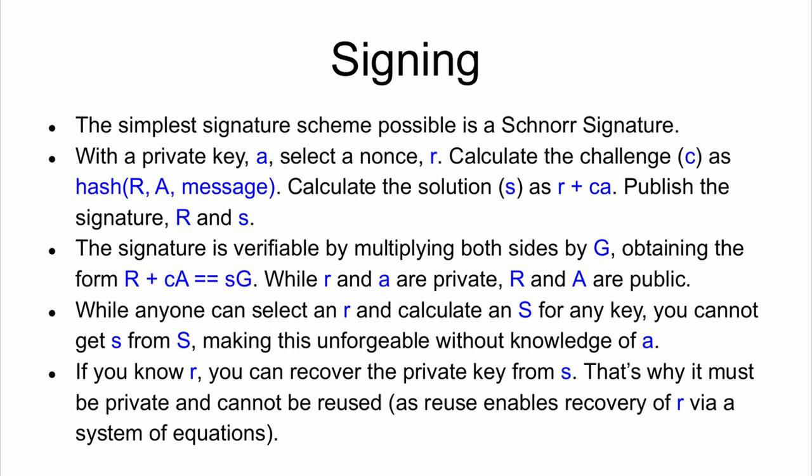Basically, because S should equal R plus C times a, you can multiply both sides by G. R times G is capital R, which is part of the signature. Then you have the challenge times the private key, but when you multiply it by G, it's written as C times lowercase a times G, which is equivalent to C times uppercase A, because uppercase A is lowercase a times G — the public key. Then you multiply the solution by G and you can verify this.